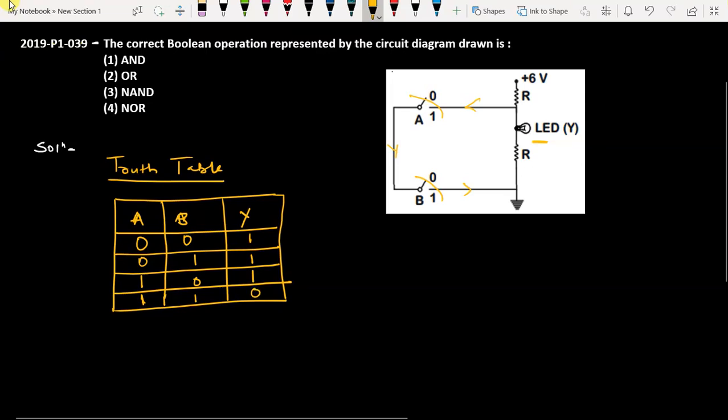In this case, when A is 0, B is 0, output is 1. When A is 0, B is 1, output is 1. When A is 1, B is 0, output is 1. When A and B both are 1, then we get the output 0.